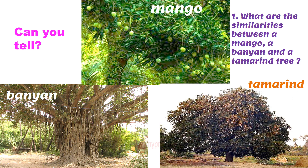Now let us understand about this classification of plants in detail. Look at these pictures — can you tell what are the similarities between a mango, a banyan, and a tamarind tree? Look at them carefully. You will find that all three trees grow very tall and they spread out. The branches are spreading out and they form a canopy — like an umbrella or dome shape on top — and they give a lot of shade. That leaf formation at the top of the plant is called the canopy.